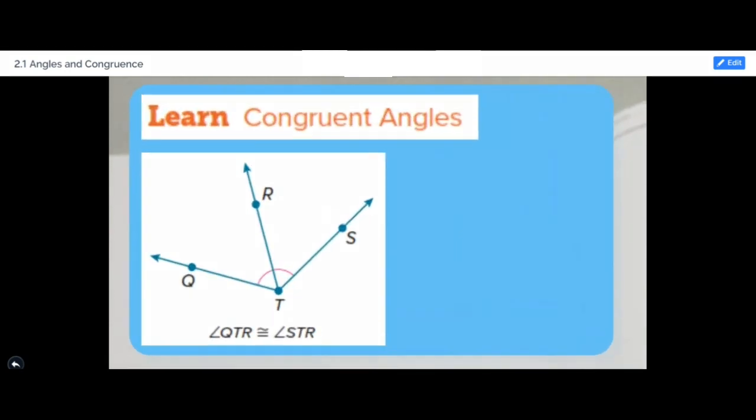Congruent angles are angles that have the same measure. We symbolize it by this congruence symbol.